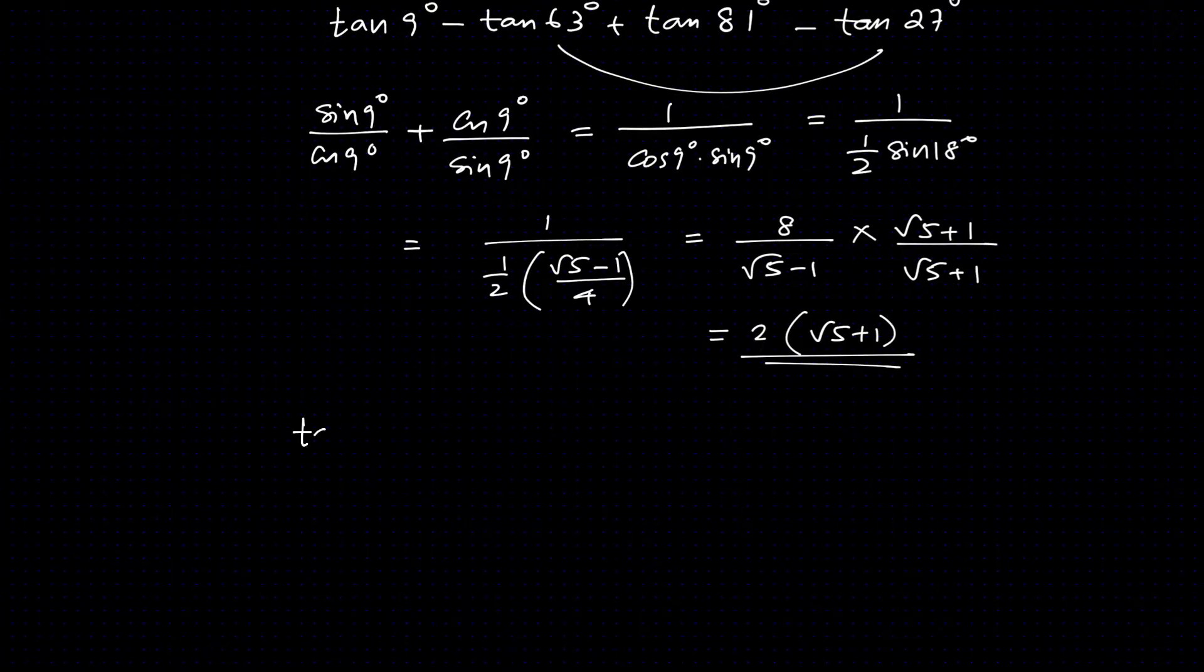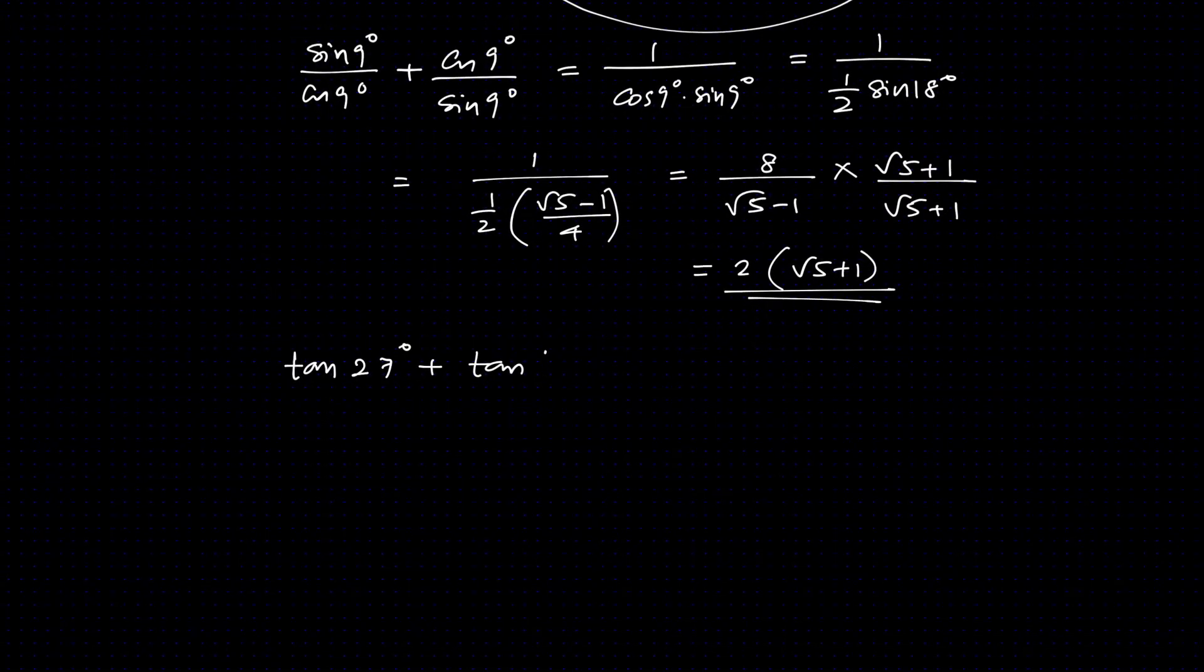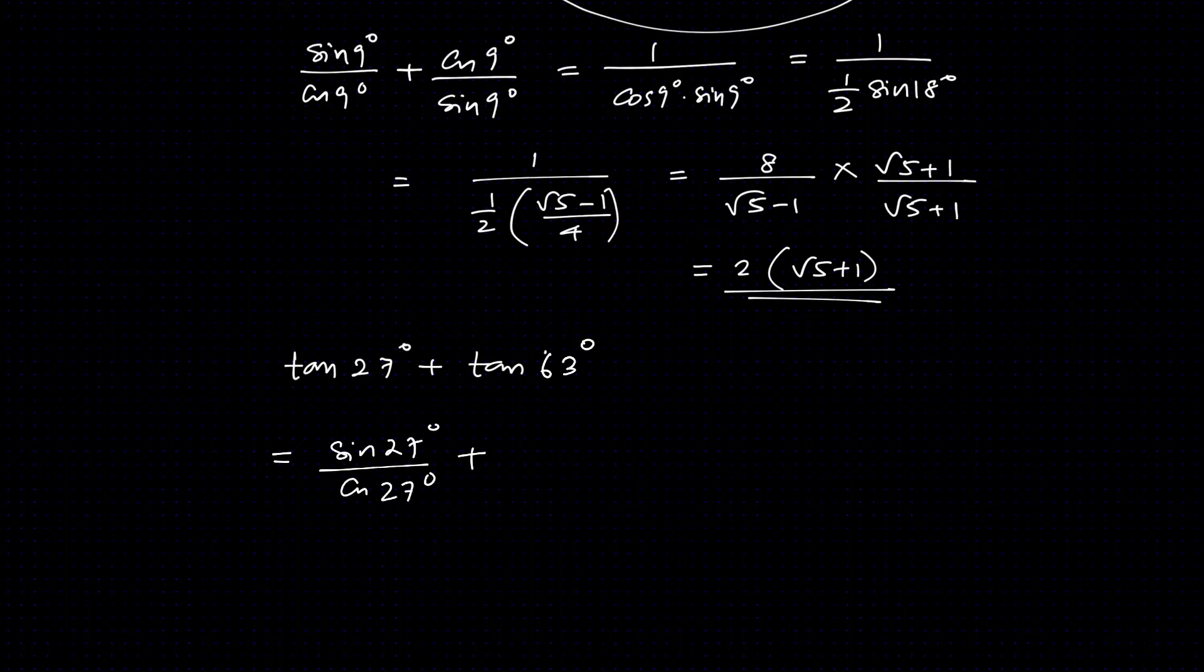Now tan 63 degrees, tan 27 degrees plus tan 63 degrees. Minus in the other sense, subtract. So this becomes sin 27 degrees by cos 27 degrees. Tan 63 degrees, subtract 27: cos 27 by sin 27. Now this is the sum sin 27 plus cos 27.